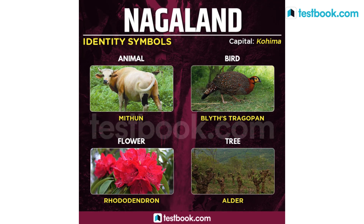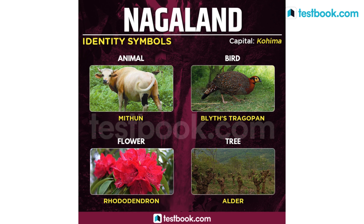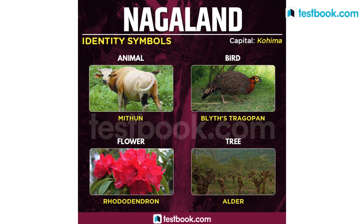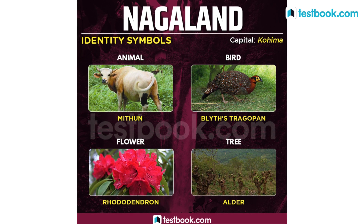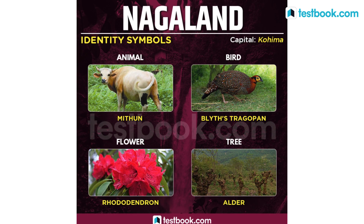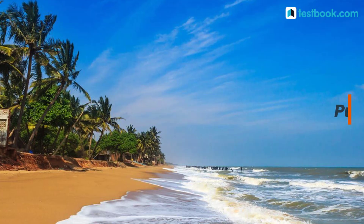For Nagaland, the state animal is Mithun, state bird is Blyth's Tragopan, state flower is Rhododendron and state tree is Alder.